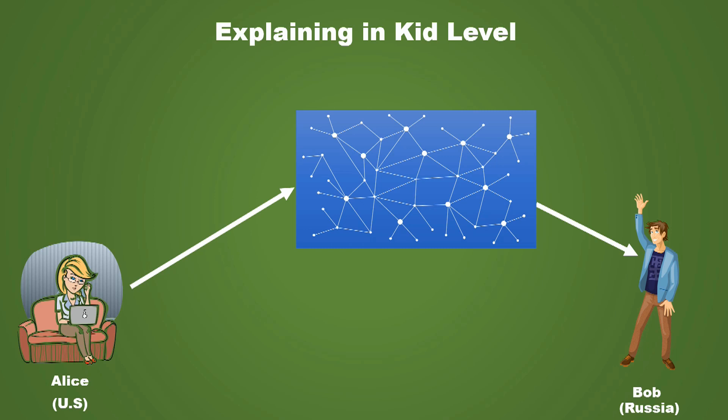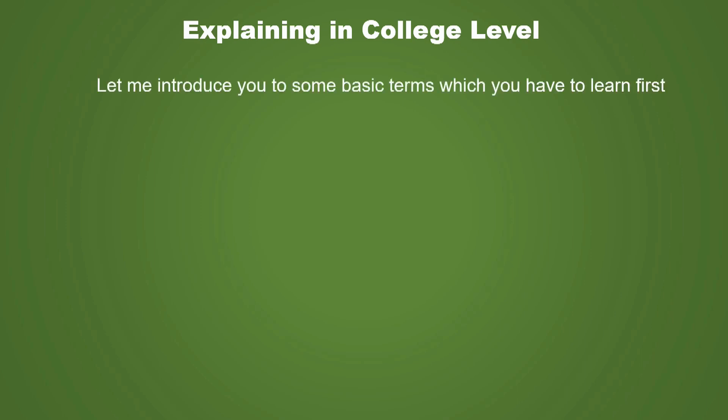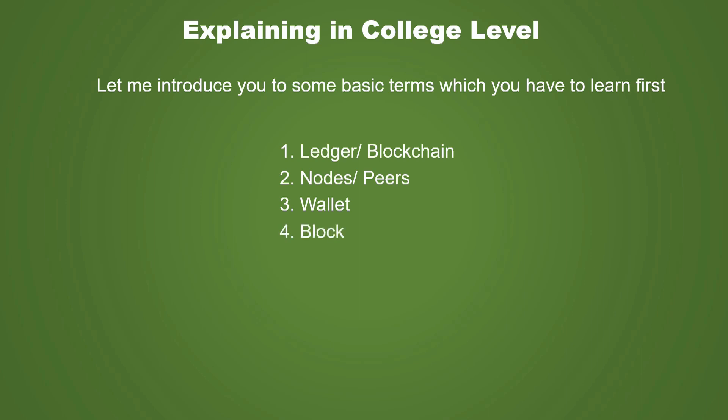Now let me explain the concept to a college graduate. You might know the very basics of blockchain technology and the difference between blockchain and Bitcoin. Let's dive into a little more detail. First, I will introduce you to four basic terms: Ledger or blockchain, Nodes or Peers, Wallet, and Block.